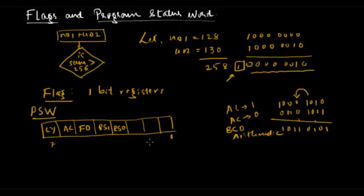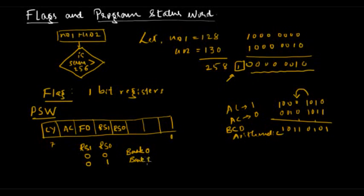The next two bits are RS1 and RS0. We know that 8051 has four banks of registers, and we select those banks using these two bits. When RS1 and RS0 are 00, bank 0 is selected; 01 selects bank 1; 10 selects bank 2; and 11 selects bank 3.